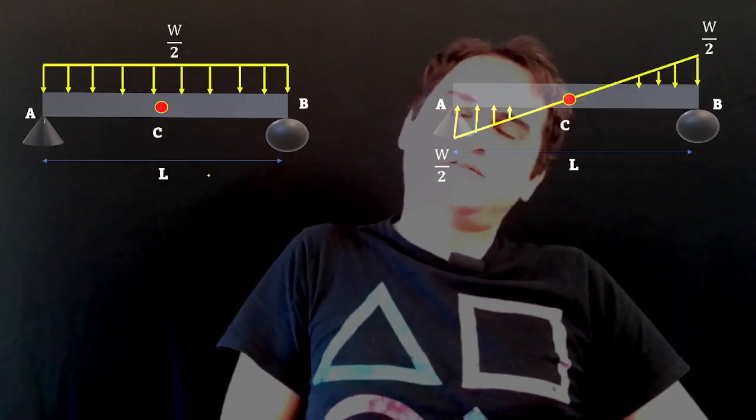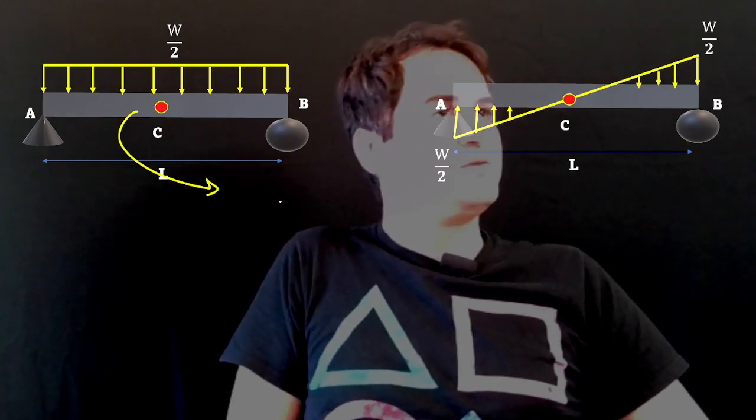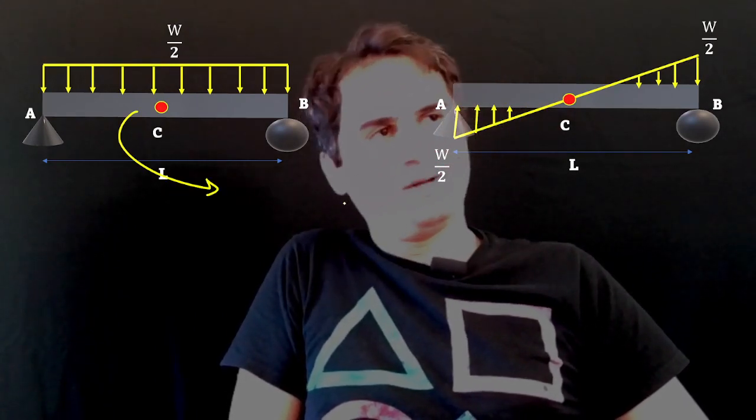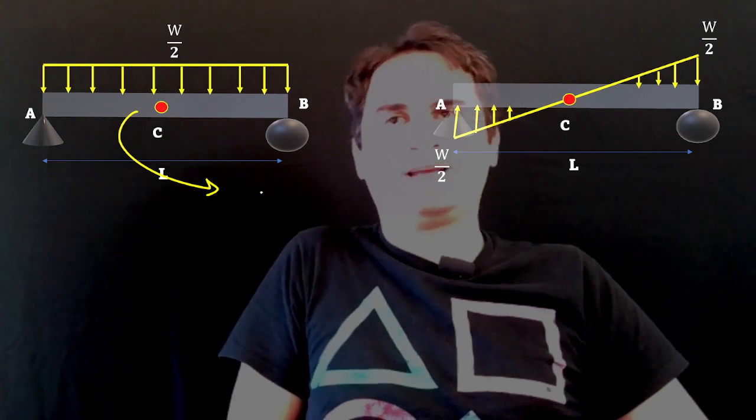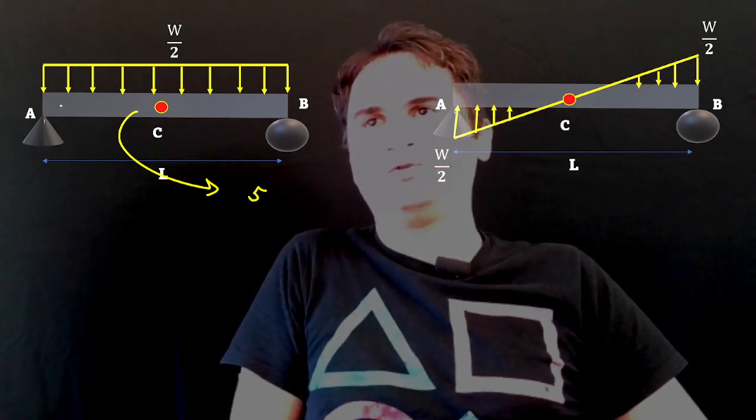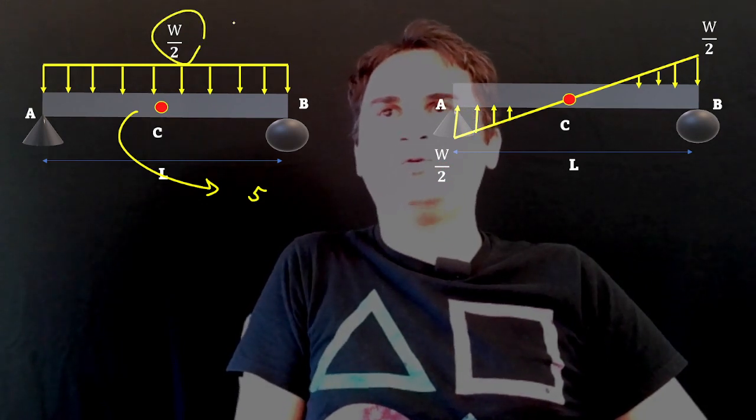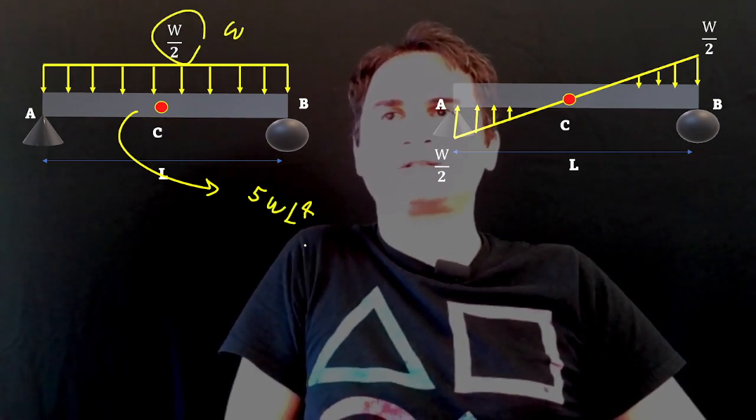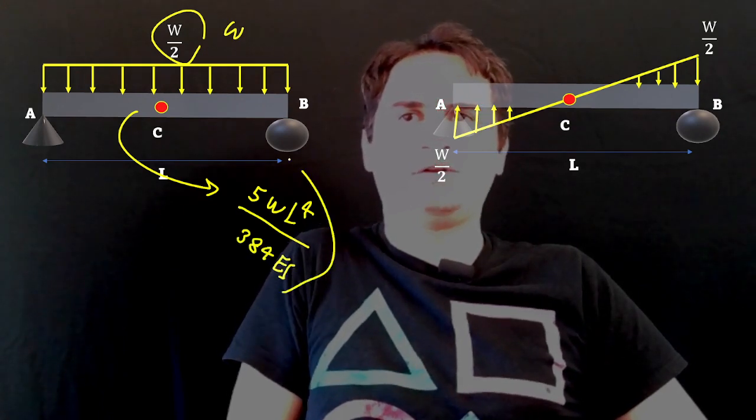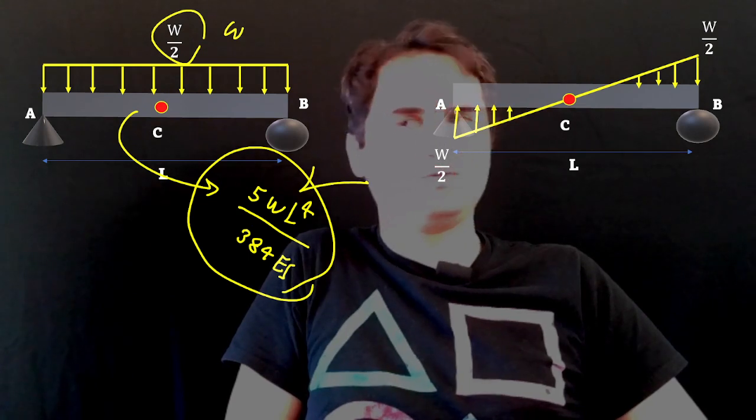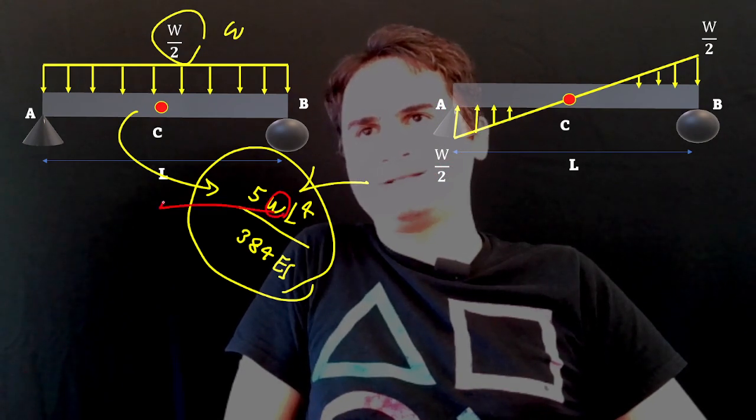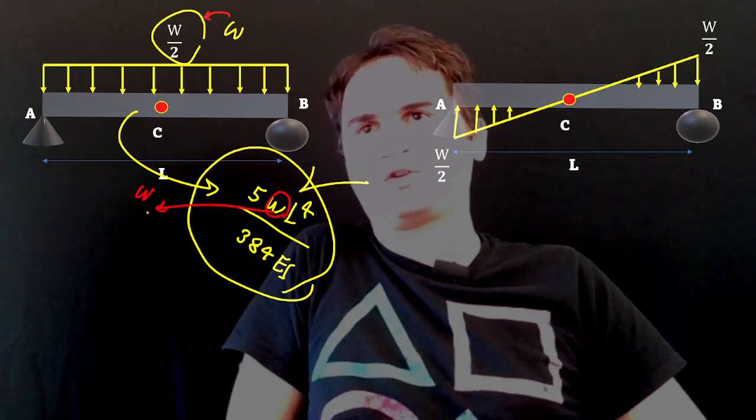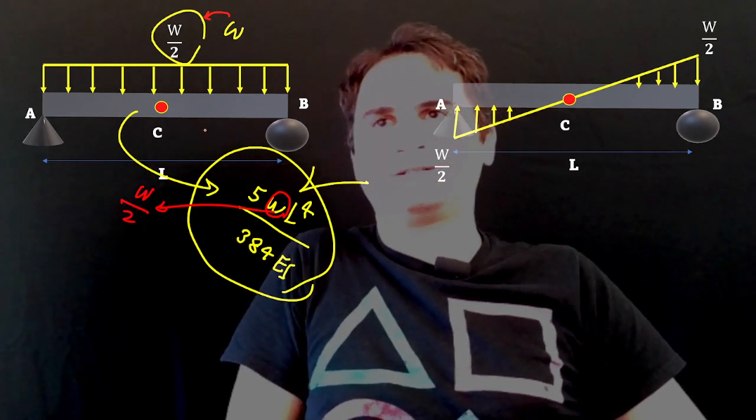From previous examples and mechanics of solids—using area moment method or virtual work method—we know that for a simply supported beam with uniformly distributed load W, the deflection is 5WL^4/(384EI). I will provide a link to see how to calculate this value. If you replace W with W/2, everything remains the same but the deflection at center changes accordingly for the first beam.